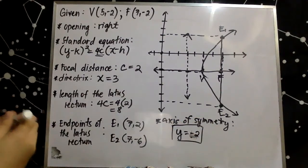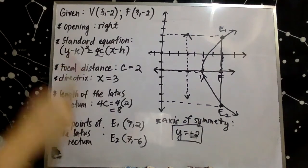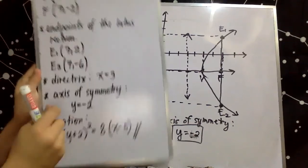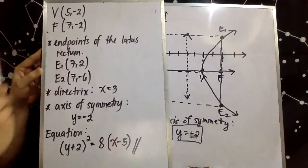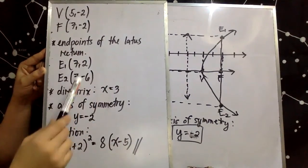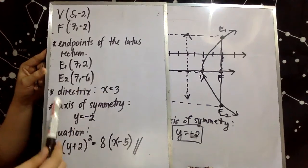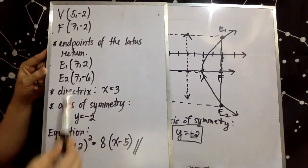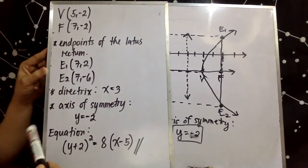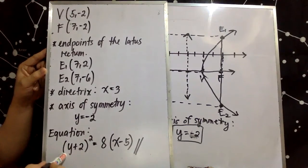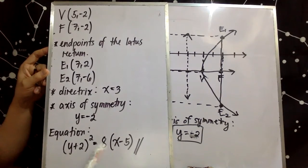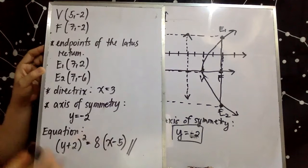So these are the parts and properties of the parabola given vertex and focus. The coordinates of the endpoints of the latus rectum are (7, 2) and (7, -6). The equation of our directrix is x equals 3. The equation of our axis of symmetry is y equals negative 2. The standard equation of the given parabola is the quantity (y plus 2) squared is equal to 8 times the quantity (x minus 5).